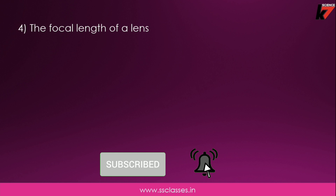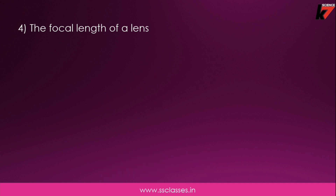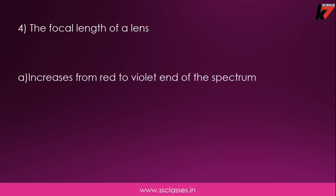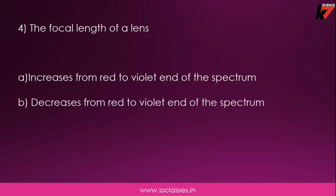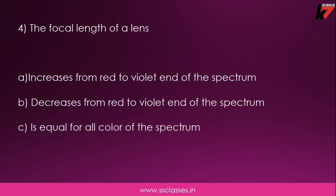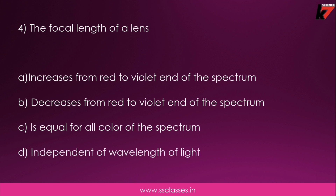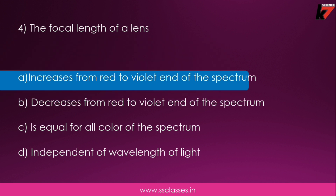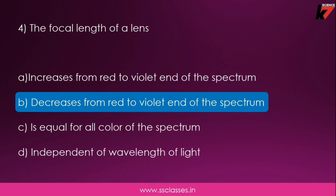Fourth question: the focal length of a lens — increases from red to violet end of the spectrum, or decreases from red to violet end, or is equal for all colors, or is independent of wavelength of light? Option B is correct: the focal length decreases from red to violet end of the spectrum.